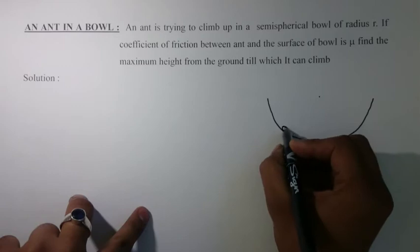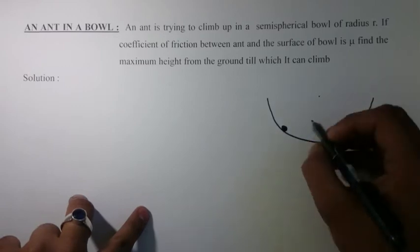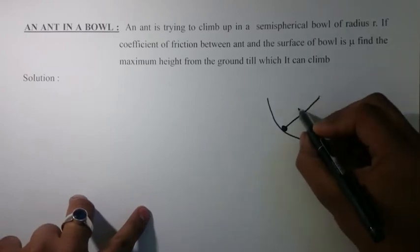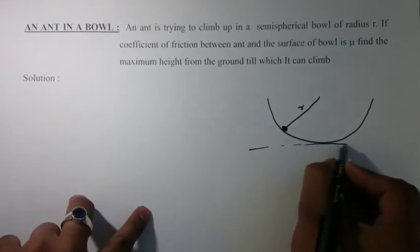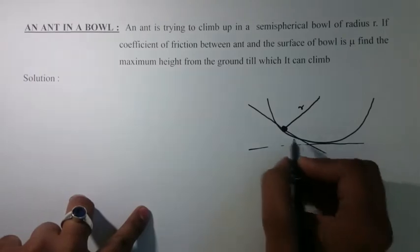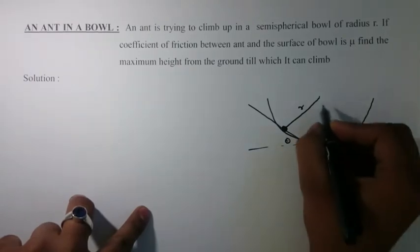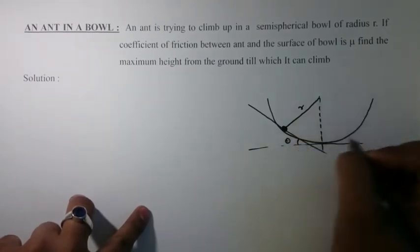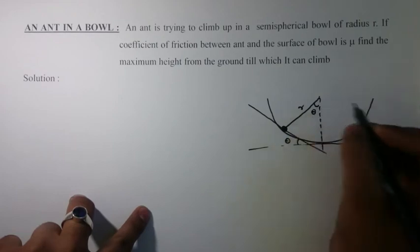This is the point where the ant can climb up. This would be radius r. If we draw a tangent and this is theta, then this would also be theta.